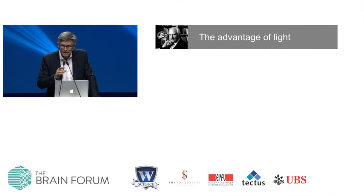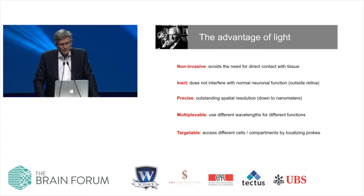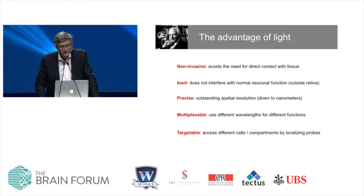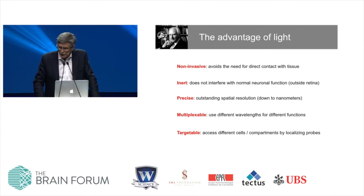In the past 10 years, there's been a revolution in our ability to use light to both read and manipulate activity in neural circuits. The advantages are clear: light is non-invasive, avoiding direct contact with tissue; it's inert and doesn't interfere with normal neural function outside the retina; it's highly precise, achieving spatial resolution down to nanometers with super-resolution microscopy; and it's multiplexible, using different wavelengths for different functions. Combined with genetically encoded probes, you can target specific cell types and even sub-cellular compartments.